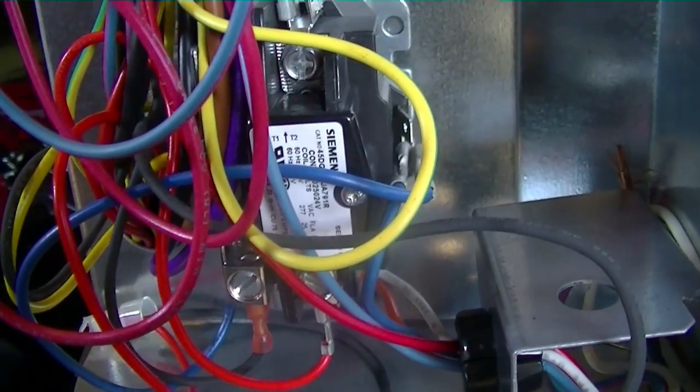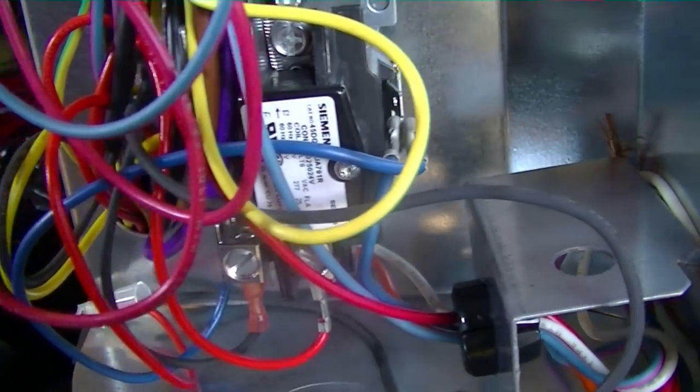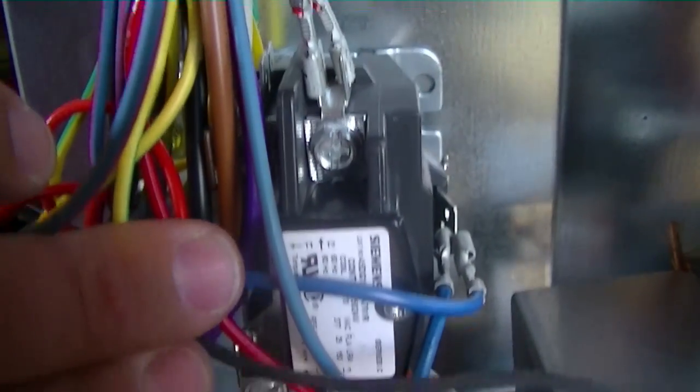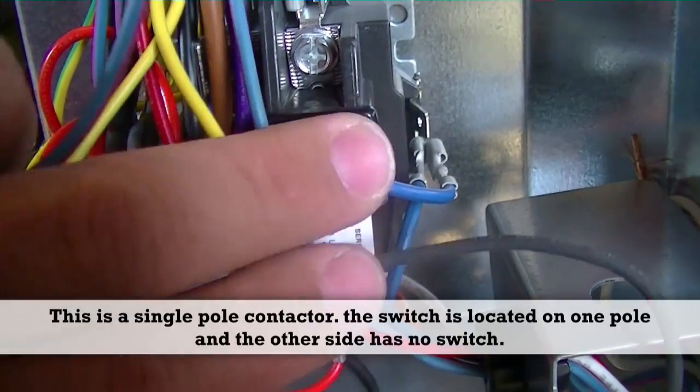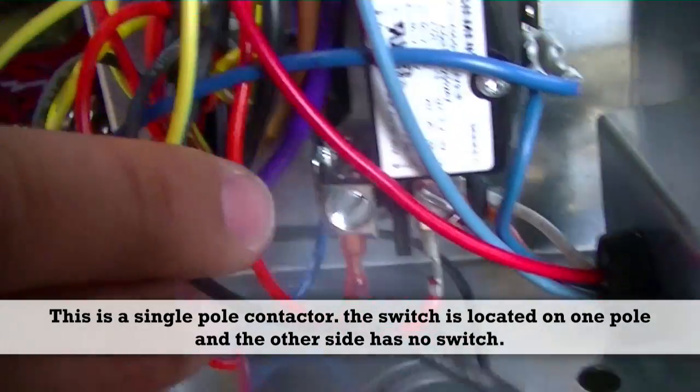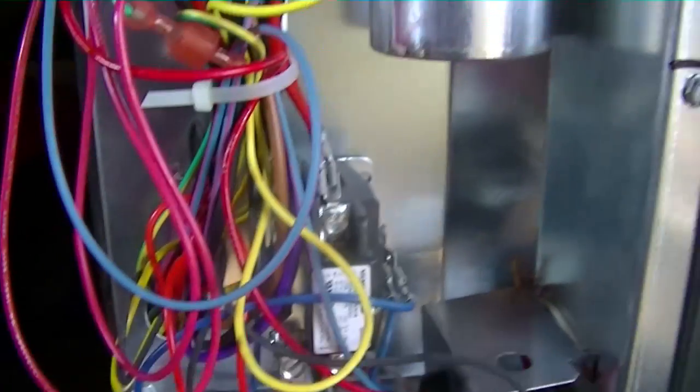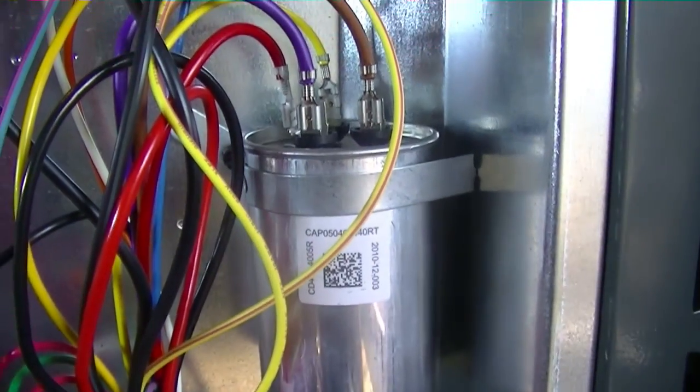There's our single pole contactor, called a single pole contactor because the switch is just on one of the poles. We see this is the switch inside of this, a little encasement right here, the other side just runs straight through. It's a little difficult to see, we'll go over that on a different occasion, but for right now we're looking at the dual run capacitor.